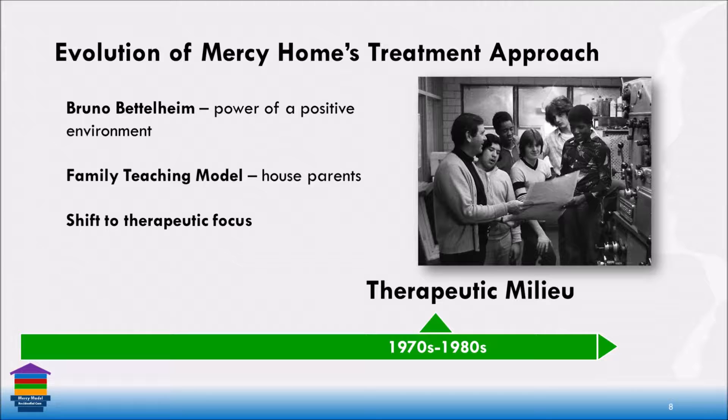In the late sixties and seventies, we adopted the family teaching model, where we had house parents living here and creating more of a family atmosphere, but it was a very behavioral approach with cards and different skills that people were supposed to be learning. It seemed to have a lot of merits, but maybe didn't go as far as it could in addressing complex trauma the way some of the things we're doing now do.